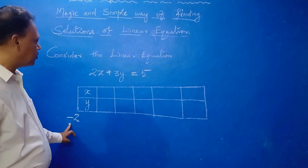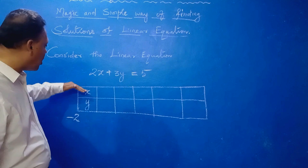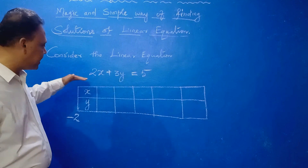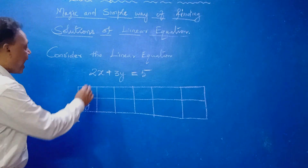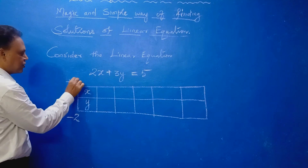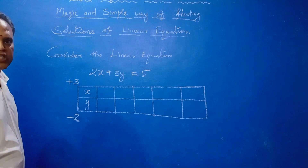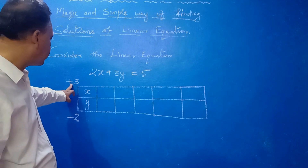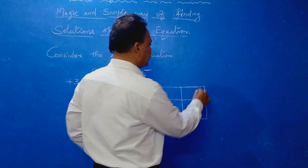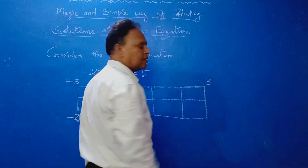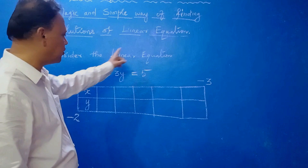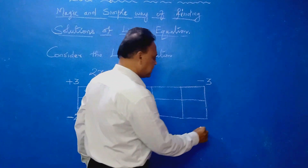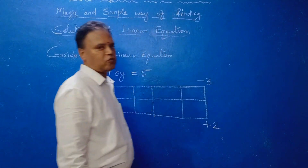Then the y-coefficient, you write above x — as it is, no change. That is the rule. Now, this plus 3 means you bring it as minus 3 — just the opposite sign. Then here minus 2 means you bring plus 2. This sign means plus 2.